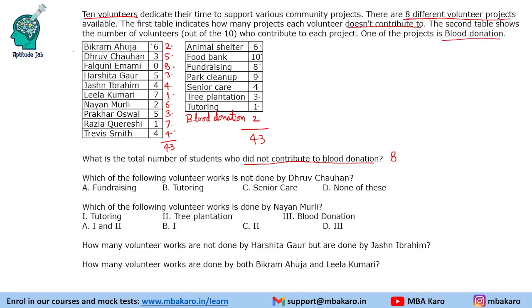Now we need to map the table to see who contributes to which project. We look for extremes. For food bank, all 10 people contribute, so all 10 people will contribute to food bank. Leela Kumari will contribute to food bank for sure — that is the only project where all 10 people contribute. For park cleanup, it has 9 contributors, and Leela Kumari can only contribute to food bank.